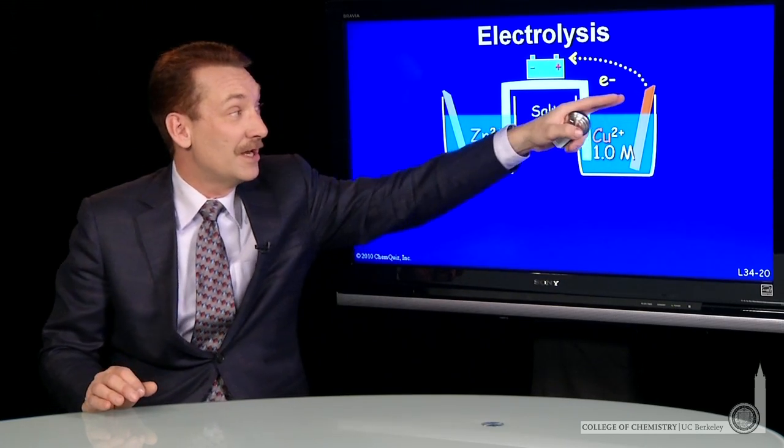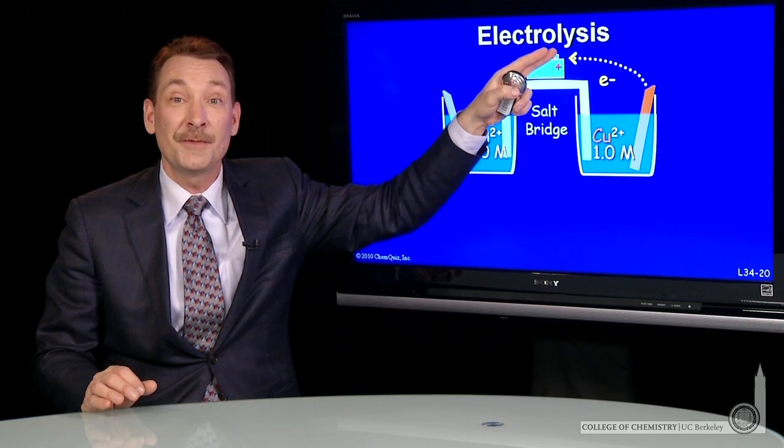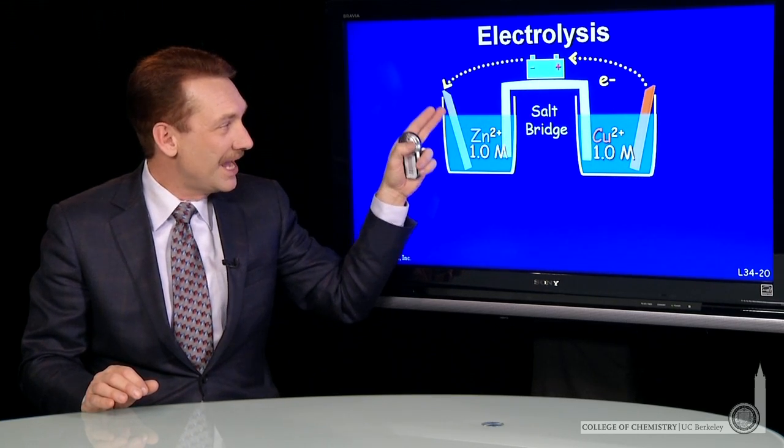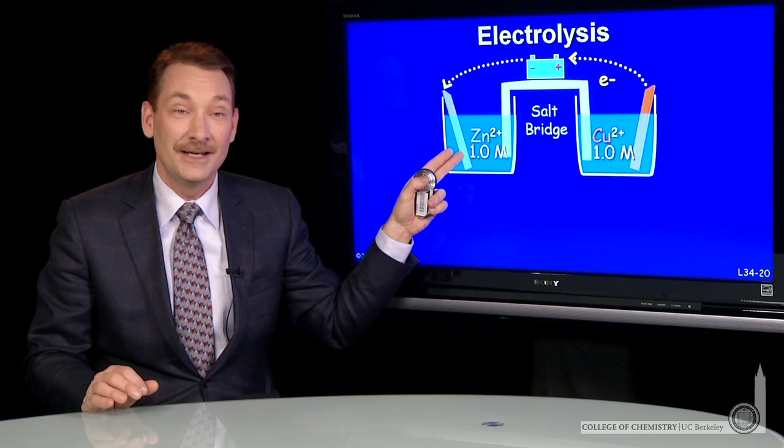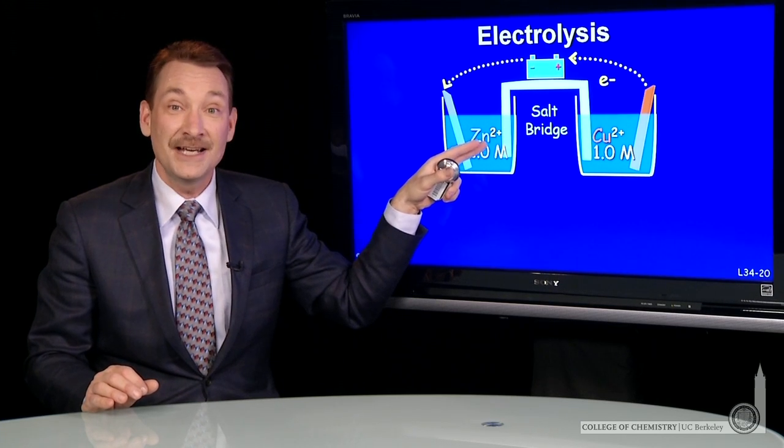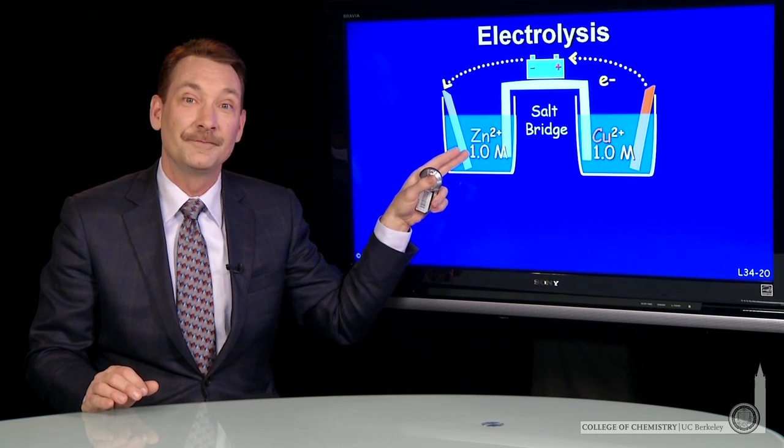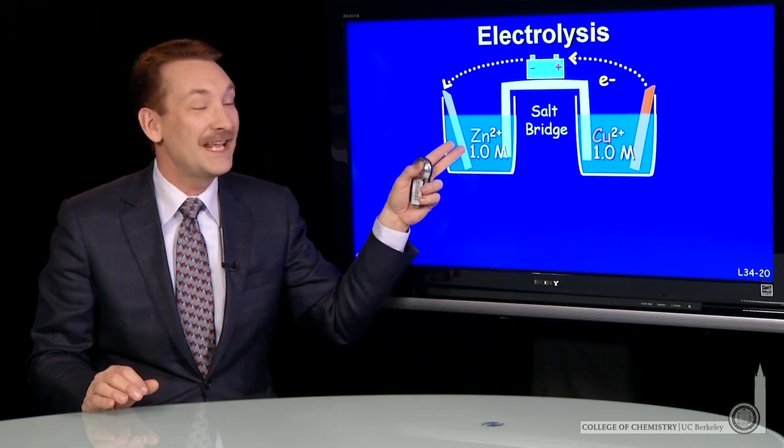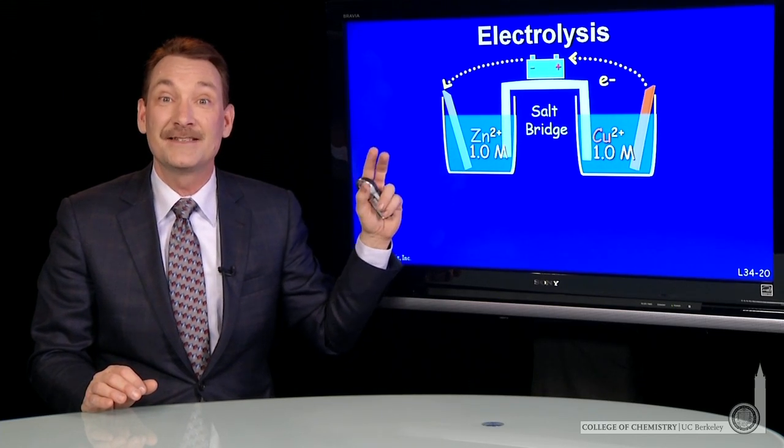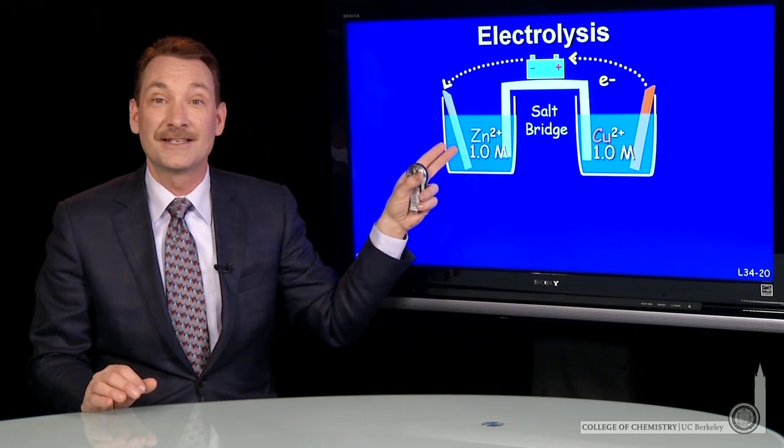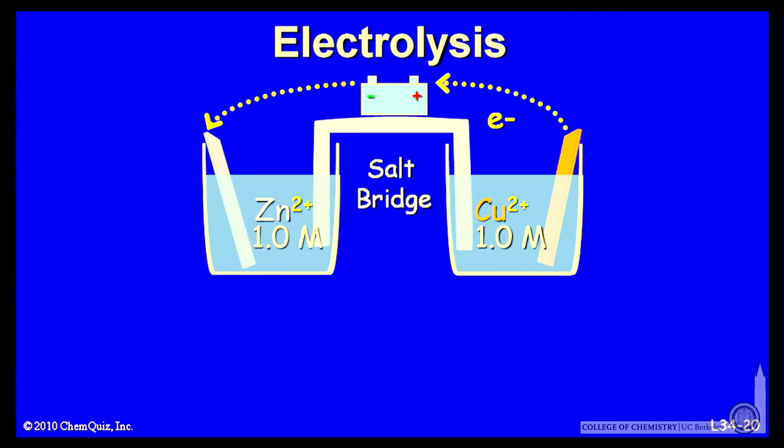If we do that, we can withdraw electrons from the copper in the non-spontaneous direction and deposit them on the zinc, reducing zinc ions to zinc metal. This gives a way to plate out zinc, that is, to make zinc metal against the natural spontaneous direction with the application of an external voltage.